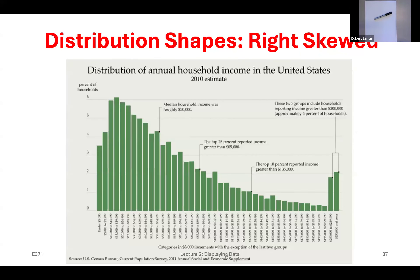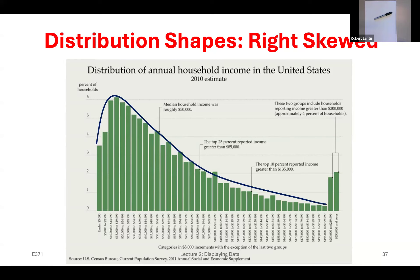Right-skewed data is when the histogram peaks on the left with a really long right tail. Looking at U.S. income data from 2010, the histogram peaks toward the lower values and has an extremely long right tail — because a few people make very high incomes, pulling the tail to the right. Anytime I have a histogram with a long right tail, most data is on the left side with just a few extremely high values — that's right-skewed data.